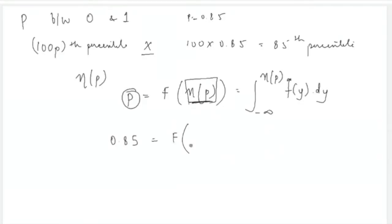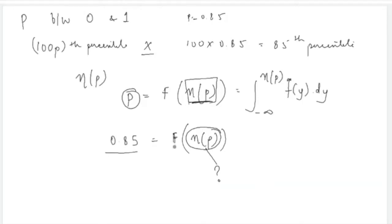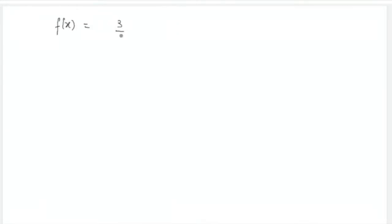For the 85th percentile, p = 0.85, and you need to find η_p such that the cumulative probability at that point equals 0.85. Let's take an example: suppose the probability distribution function is f(x) = (3/2)(1 − x²) for x between 0 and 1, and 0 otherwise.